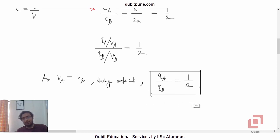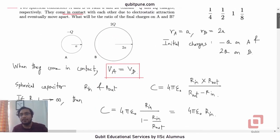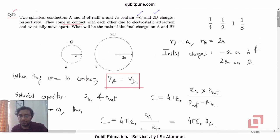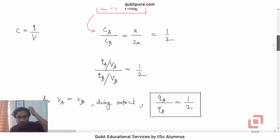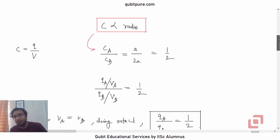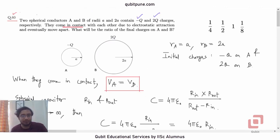QA upon QB will be equal to half. You can calculate the net charge later because there will only be one unknown here. The other one will be obtained because the charge is always conserved. So what will be the ratio of the final charges on A and B? QA upon QB is what we want, and that ratio is 1/2. That ratio is 1/2. So the correct option is half.